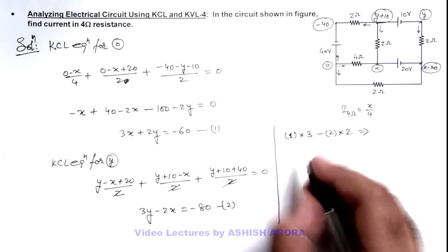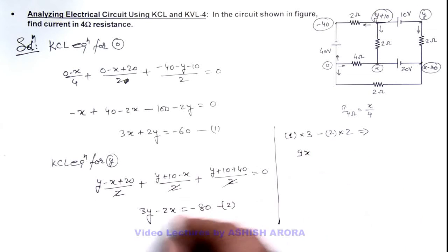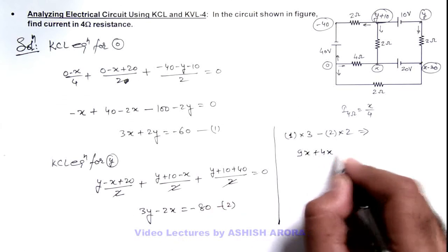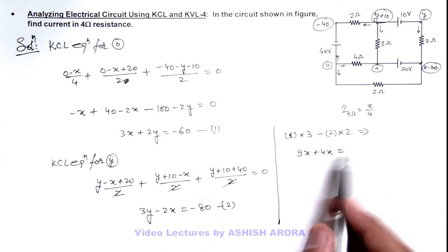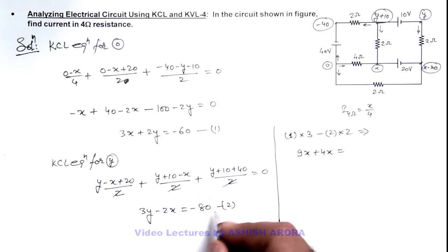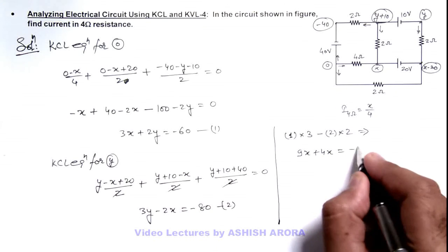Result we are getting is 9x. This will become plus 4x is equal to here it is minus 180 and this is minus 160, so this is minus 20.